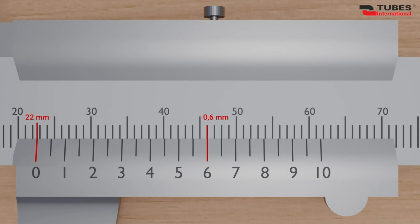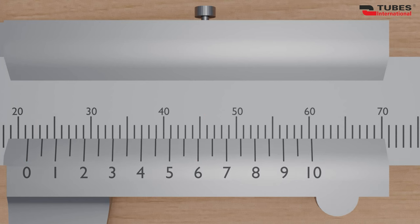However, the caliper can measure with greater accuracy. Let's read this dimension. We see that zero is located at this point, so we have 21 millimeters. Now let's check the fractional values. We see that these lines align, which gives us 0.35 millimeters. Therefore, the exact dimension is 21.35 millimeters.